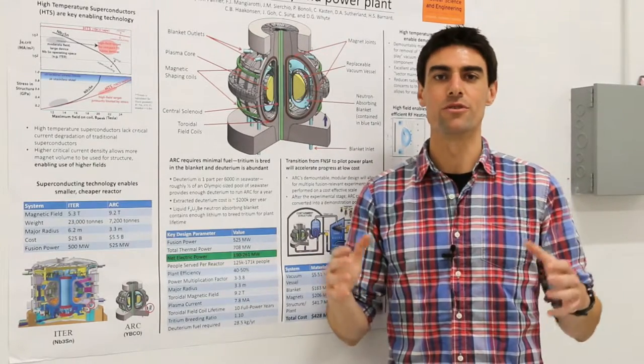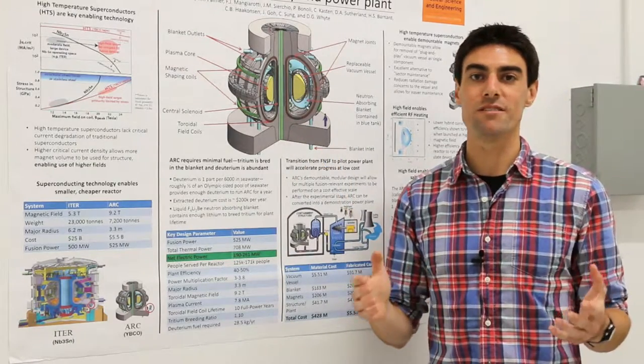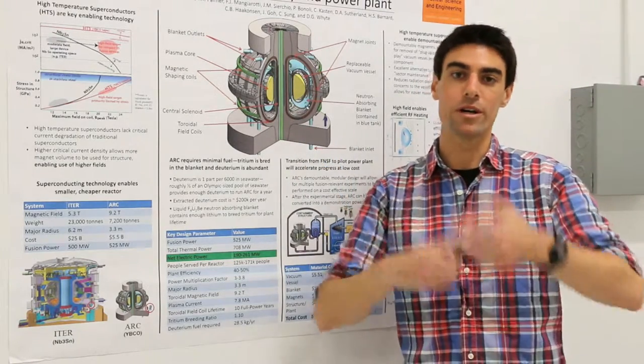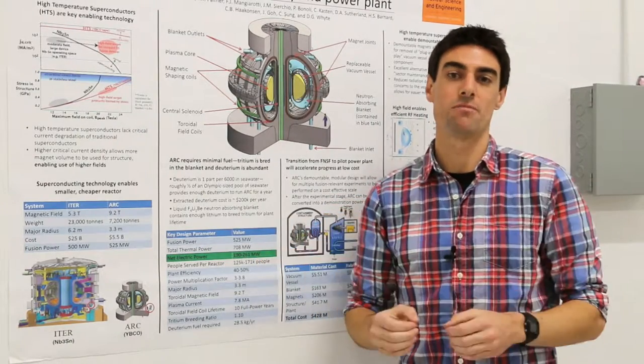Right there, you can see there's an enormous win that you can gain. If you double the magnetic field, then you can get a 16-fold increase in the power. Or if you flip that around, you could keep the power the same or build a device that's 16 times smaller.